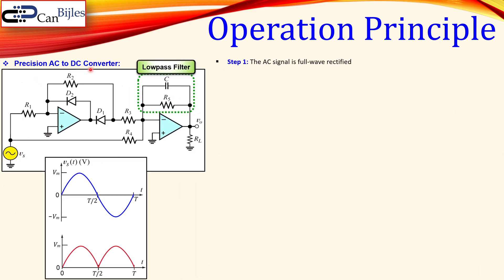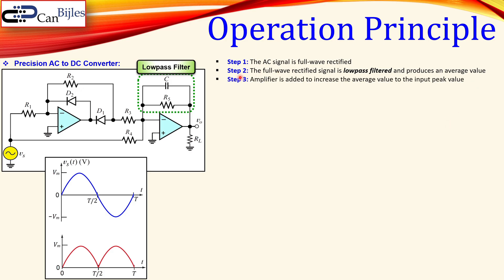Now step by step, this precision AC to DC circuit works as follows: first the AC input signal is full-wave rectified to produce the absolute value; then the full-wave rectified signal is passed through a low-pass filter; this produces an average value which is less than the peak value we want at the output; so an amplifier is added to increase this average value to the input peak value.